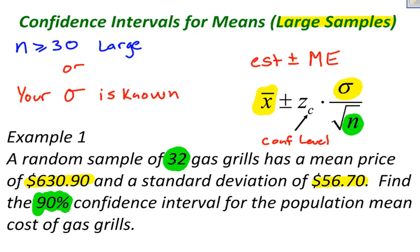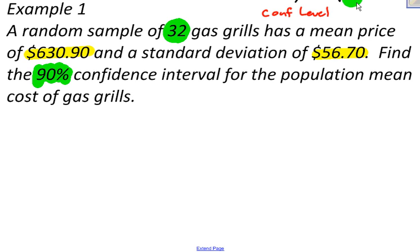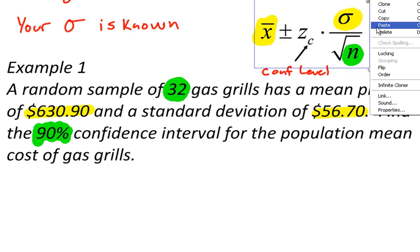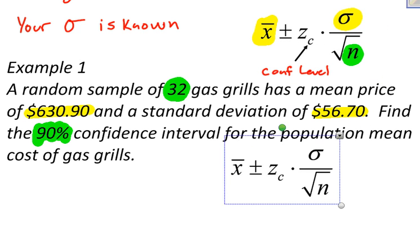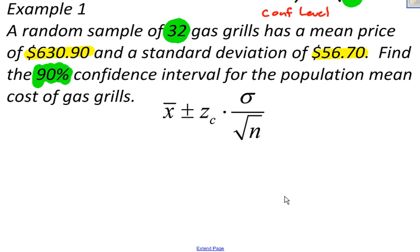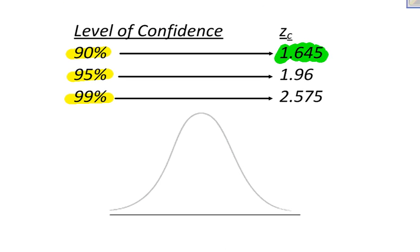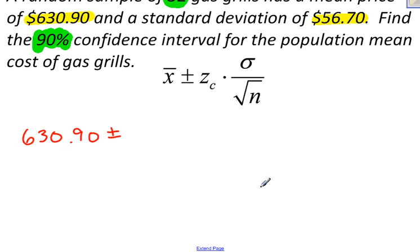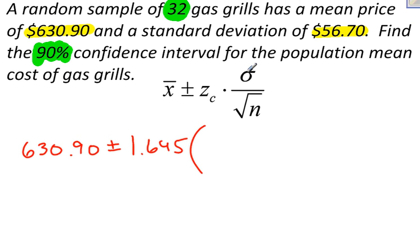So let's start to plug things in to my formula now. And I'll actually bring this formula down so we can see it a little bit easier. I start with my estimate, my point estimate, which is my sample mean, $630.90, plus or minus my critical value or my Z score, 1.645, and I'm going to multiply that times the standard deviation, which is 56.70, all over the square root of my sample size, which is 32.